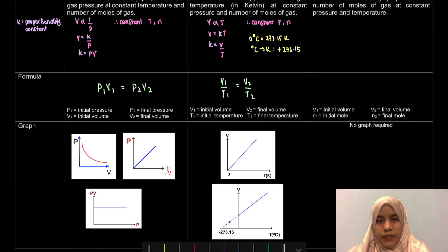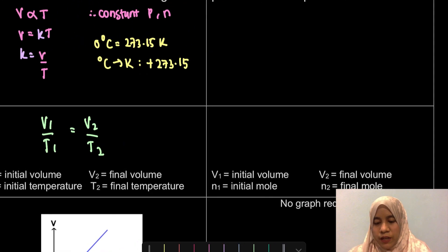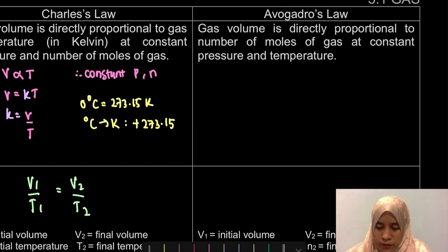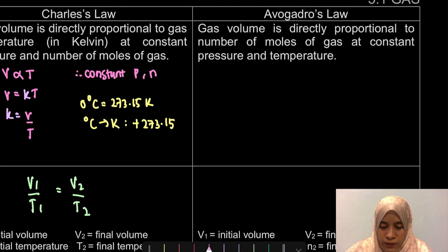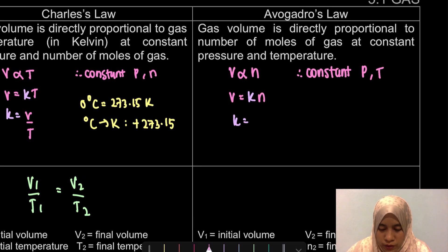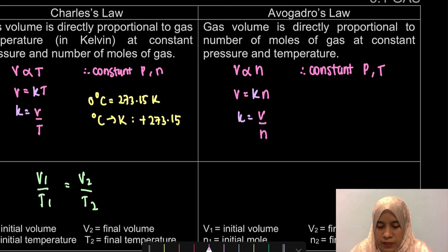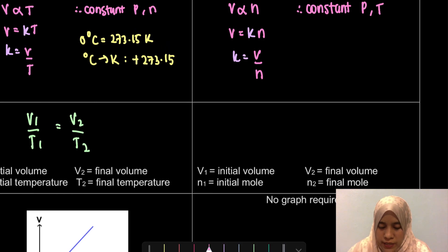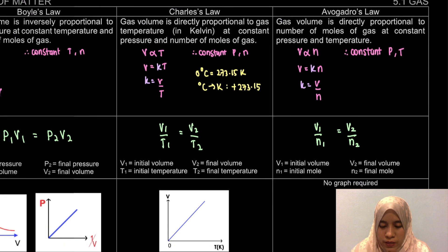The last one - Avogadro's law. This is something new. Sebab kalau in physics kamu tak belajar, tapi kalau chemistry kita akan belajar Avogadro's law. So from here, it mentioned that the volume is directly proportional to the number of moles at constant pressure and temperature. Dekat sini, masih lagi volume directly proportional to N, tapi mesti constant pressure and temperature. Kita akan buat kalau V ni kita nak jadikan dia equal - proportional to constant. And kalau constant as a subject, kita akan dapat V over N. So that is actually the equation kita lah. So if we have two different volume and number of moles, calculation dia akan jadi V1 over N1 equal to V2 over N2.